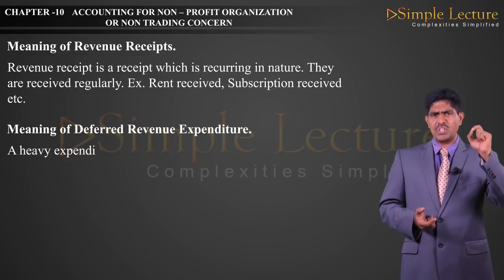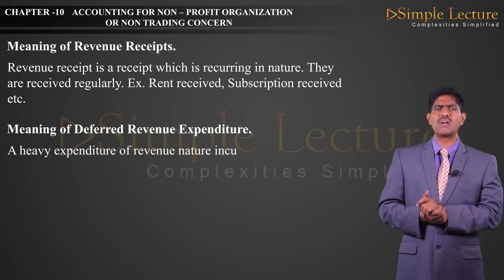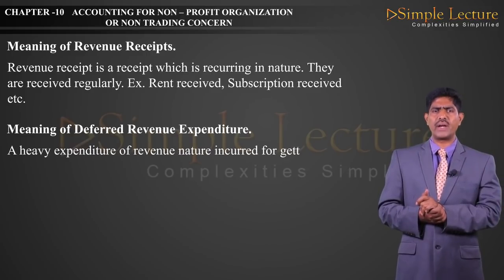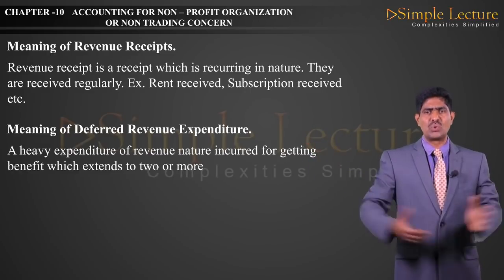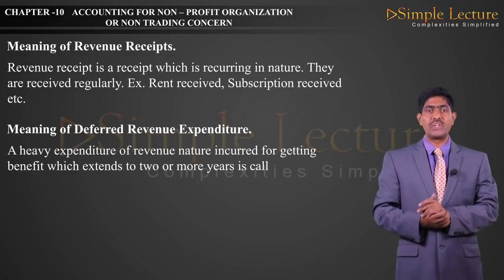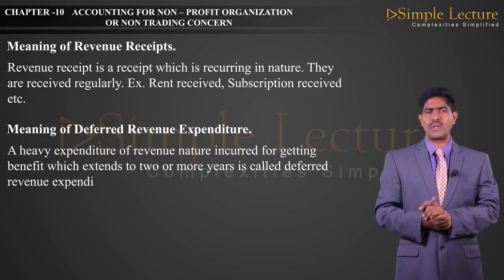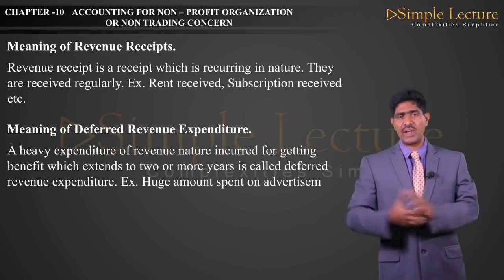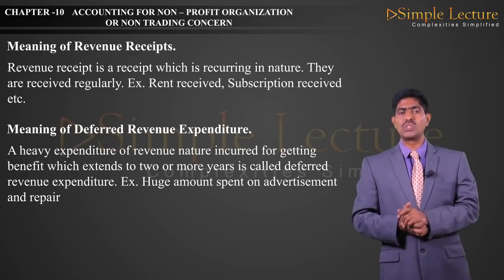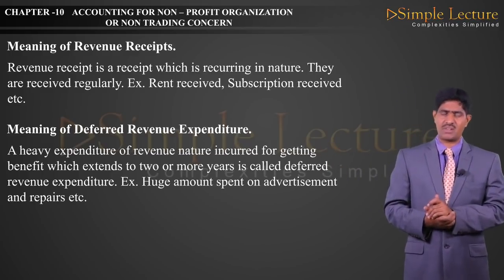Meaning of Deferred Revenue Expenditure: a large expenditure of revenue nature, incurred for getting a benefit which extends to two or more years, is called deferred revenue expenditure. Examples: a huge amount spent on advertisement, a huge amount spent on repairs, etc.